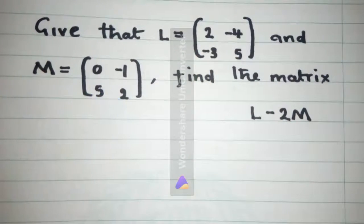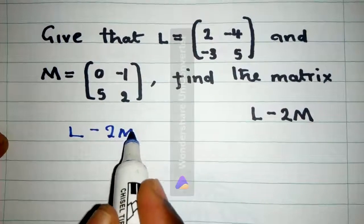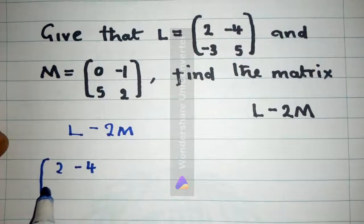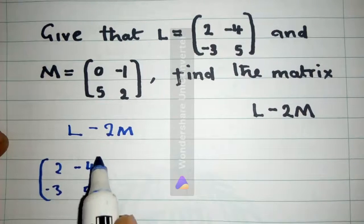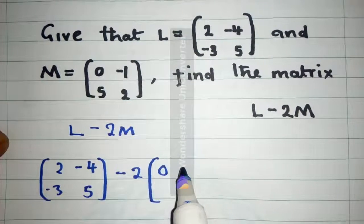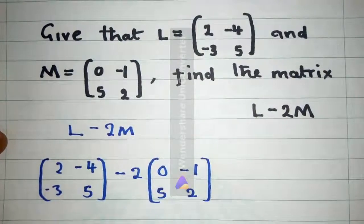So we get our L minus 2M. L is 2, minus 4, minus 3, 5 minus 2. And then our M is 0, minus 1, 5, 2 here. All right.